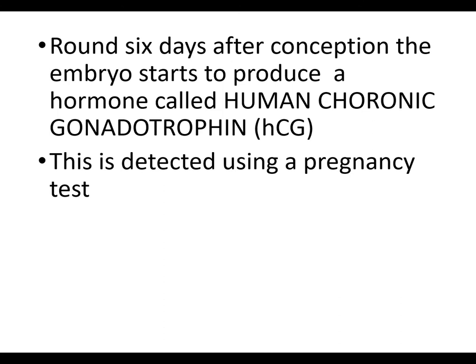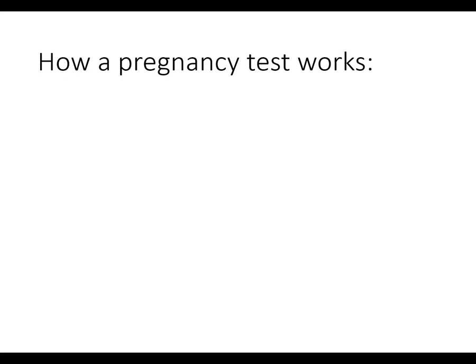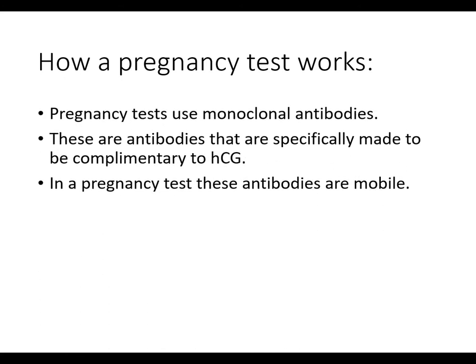The pregnancy test detects HCG using monoclonal antibodies. Unlike at GCSE where you need to know how monoclonal antibodies are produced, you do not need to know that for A-level. You do need to know that these antibodies are specifically made to be complementary to human chorionic gonadotropin. They are monoclonal - meaning there is only one type but lots of them, they are clones - and they are specific to HCG.